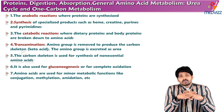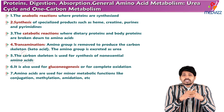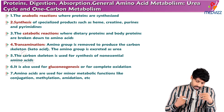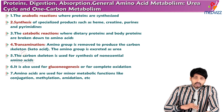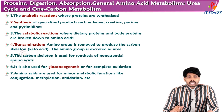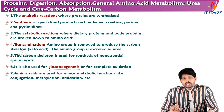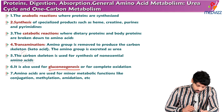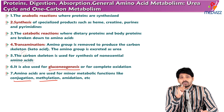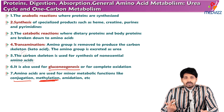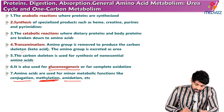Ammonia may also be produced by degradation of purines and pyrimidines and by bacterial putrefaction in the gut. The anabolic reactions include synthesis of specialized products such as heme, creatine, purines, and pyrimidines. The catabolic reactions involve breakdown of dietary and body proteins to amino acids via transamination, removal of the amino group to produce the carbon skeleton, excretion of the amino group as urea, and use of the carbon skeleton for synthesis of non-essential amino acids and gluconeogenesis.